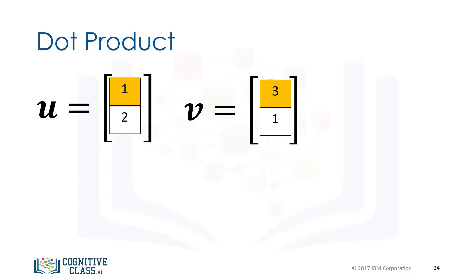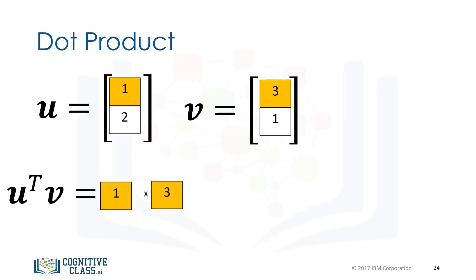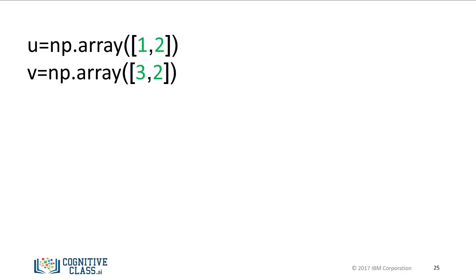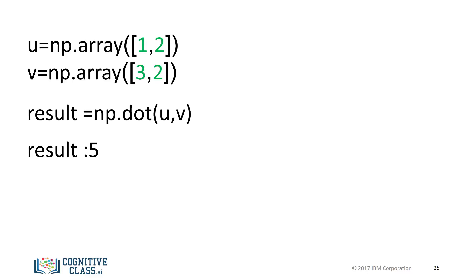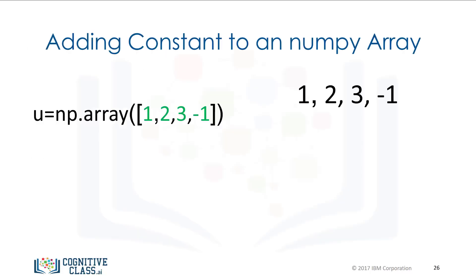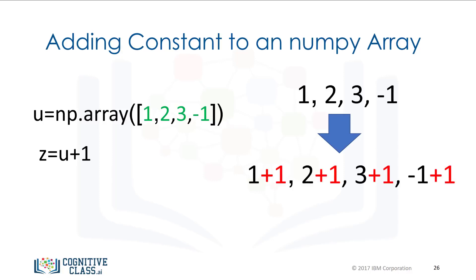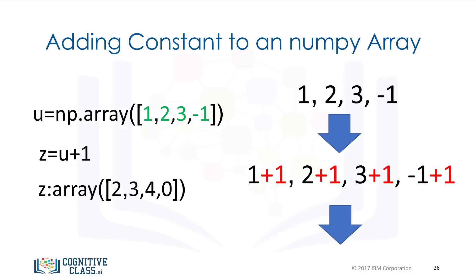The dot product is another widely used operation in data science. Consider vectors u and v. The dot product is a single number that represents how similar two vectors are. We multiply the first components of u and v, then multiply the second components and add the results together. We can perform the dot product using the NumPy function dot. Additionally, if we add a scalar value to a NumPy array, NumPy will add that value to each element — this property is known as broadcasting.